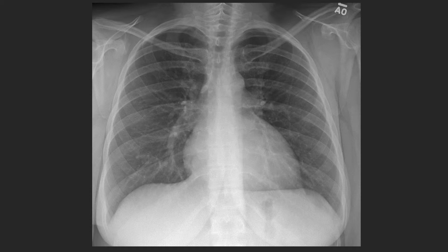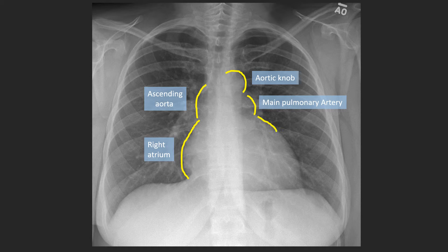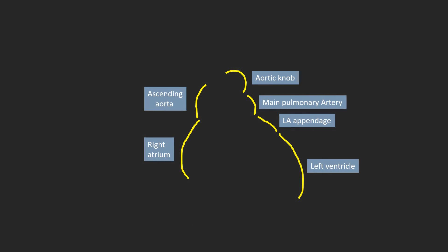With so much overlap, we have to decipher which structures we can see as a contour. On the right, the right atrium forms the first contour, and above it the ascending aorta forms the next. On the left side, the first bump is the aortic knob representing the aortic arch. Just below it is the main pulmonary artery. The bump below that reflects the left atrial appendage, and finally the majority of the left heart border is formed by the left ventricle.